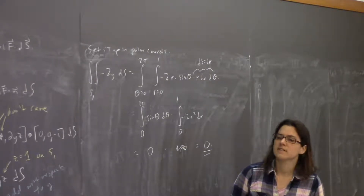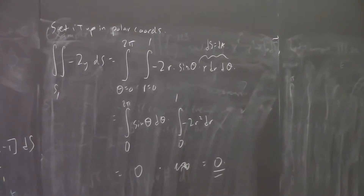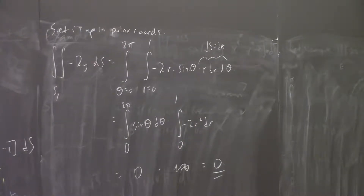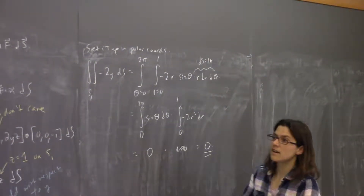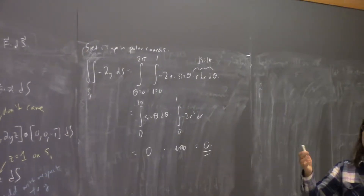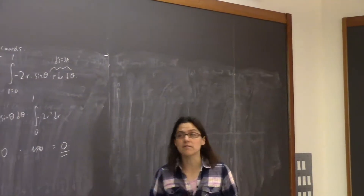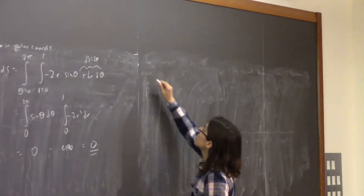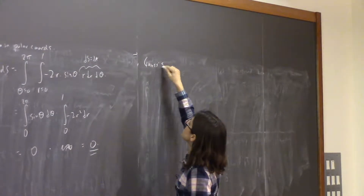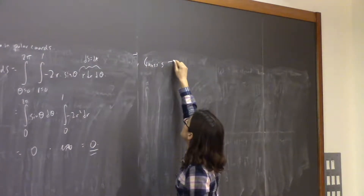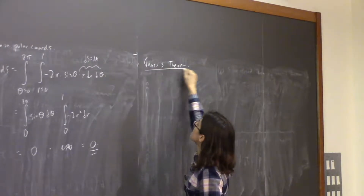So that is Stokes' theorem, which relates a surface vector integral to an integral on its boundary curve. And now we'll talk about Gauss's theorem, which is also called the Divergence Theorem, because it is about divergence.